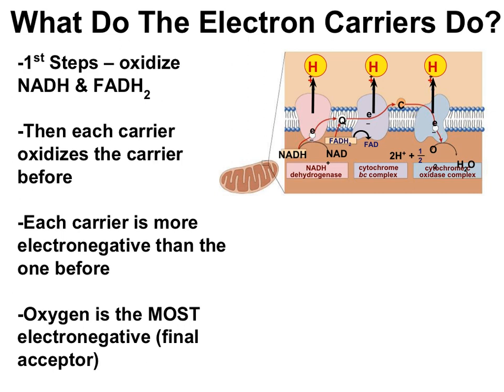First off, electron transporters will oxidize NADH and FADH2. In other words, NADH and FADH2 drop off their high-energy electrons to the electron transport chain. This transfer of electrons is a redox reaction, where NADH and FADH2 are oxidized, and the electron transporters are reduced.